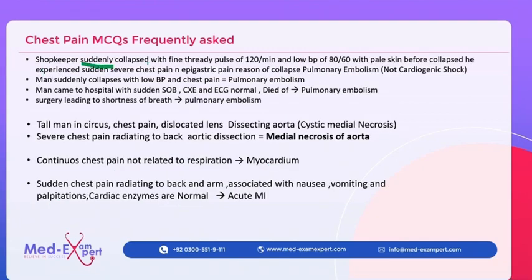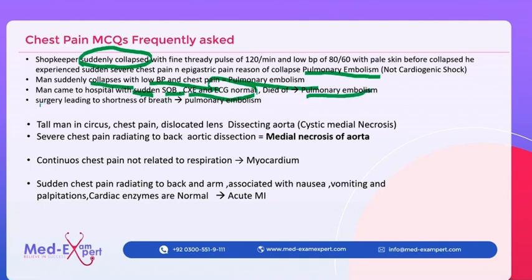A shopkeeper who suddenly collapses — sudden collapse is very important. Consider pulmonary embolism. Collapse with low BP and chest pain, pulmonary embolism. Sudden shortness of breath, chest X-ray normal, ECG showing S1Q3T3 — also pulmonary embolism. If recent surgery, stasis increases risk. Then: tall man in a circus with a dislocated lens and chest pain.